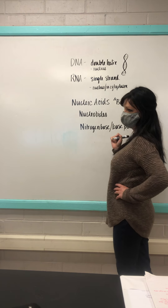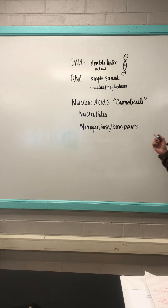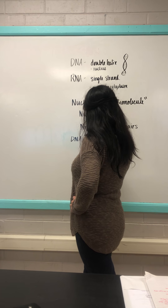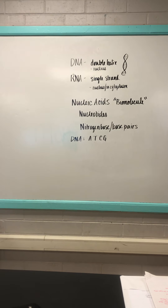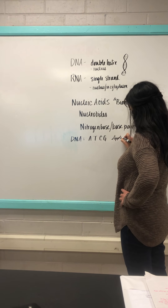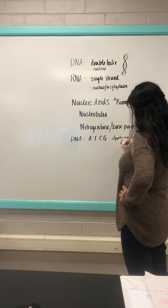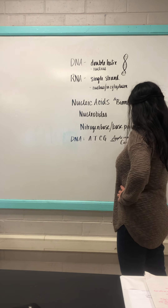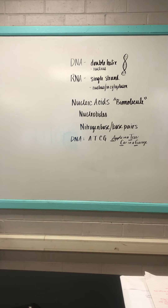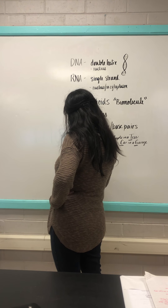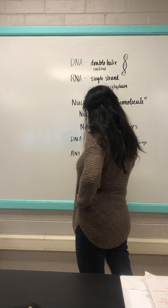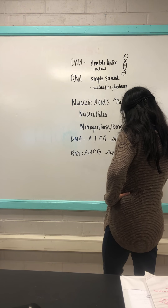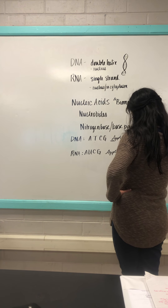For DNA, the nitrogen bases are A, T, C, and G. The mnemonic to remember is 'apple in a tree, car in a garage,' meaning A bonds with T, and C bonds with G. RNA is a little different — it has uracil instead of thymine, so the bases are A, U, C, and G, with the mnemonic 'apple under a tree, car in a garage,' meaning A bonds with U and C bonds with G.